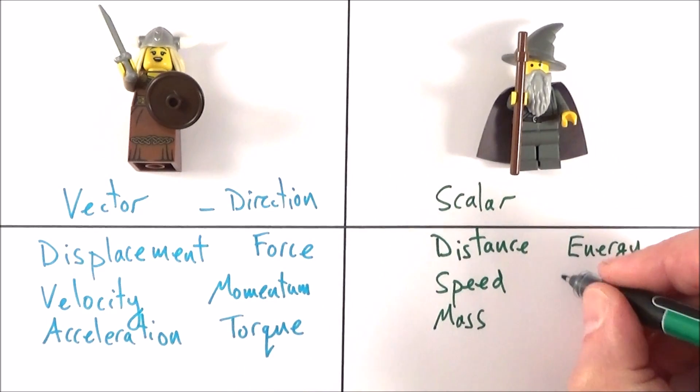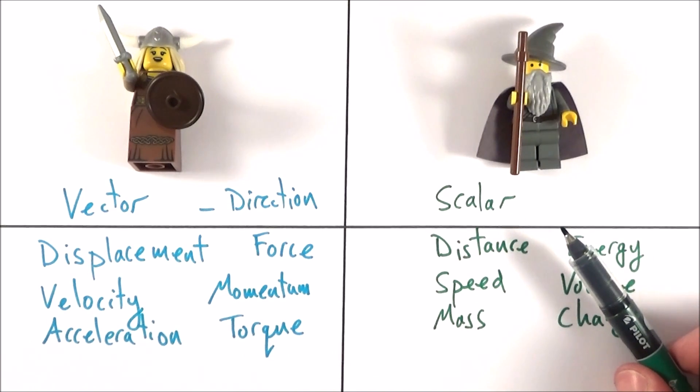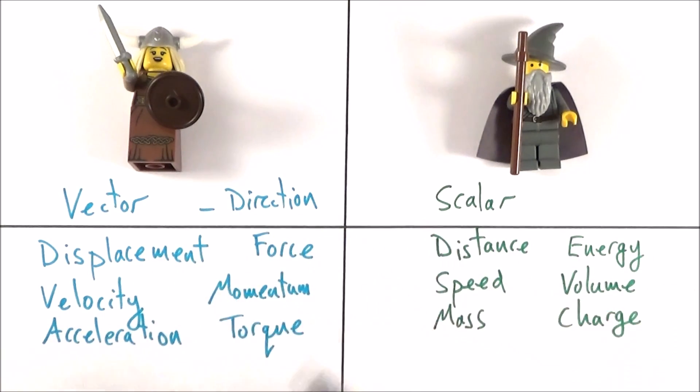This is just an amount. We have volume and also maybe things like charge. Now there are plenty more and pretty much every single quantity that we know can be split into maybe a vector or a scalar.